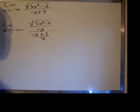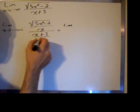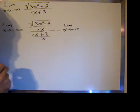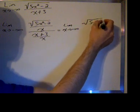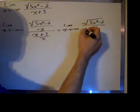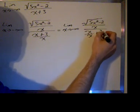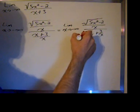We'll take care of the denominator first, then we'll come back and address the numerator. Basically, I'm just going to decompose this fraction into two and simplify. The limit as x approaches negative infinity of the square root of 5x squared minus 2 divided by x, divided by x over x plus 3 over x. x over x is, of course, just 1.